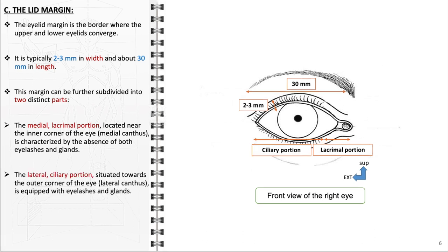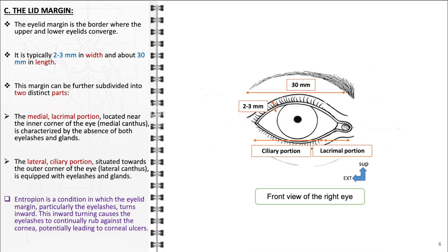The lateral ciliary portion is situated towards the outer corner of the eye, the lateral canthus, and is characterized by the presence of eyelashes and several types of glands, including the meibomian glands, which secrete an oily substance that forms part of the tear film. The structure and proper alignment of the eyelid margin are crucial for ocular health. A condition such as entropion, where the eyelid margin and eyelashes turn inward, leads to constant friction between the eyelashes and the cornea, which can cause significant discomfort and result in corneal ulcers.